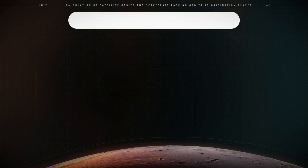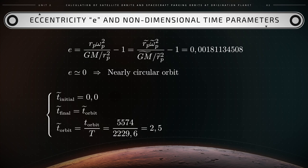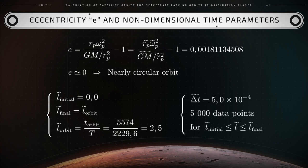The total non-dimensional time for a complete orbit is then calculated as follows. T̃ equals the ratio of the dimensional time for one orbit over the reference time T — that is 5,574 seconds over 2,229.6 seconds — which gives us 2.5 units. The non-dimensional computations are then carried out with the non-dimensional time step delta T̃ equals 0.0005 units, which will generate 5,000 data points for a complete orbit.